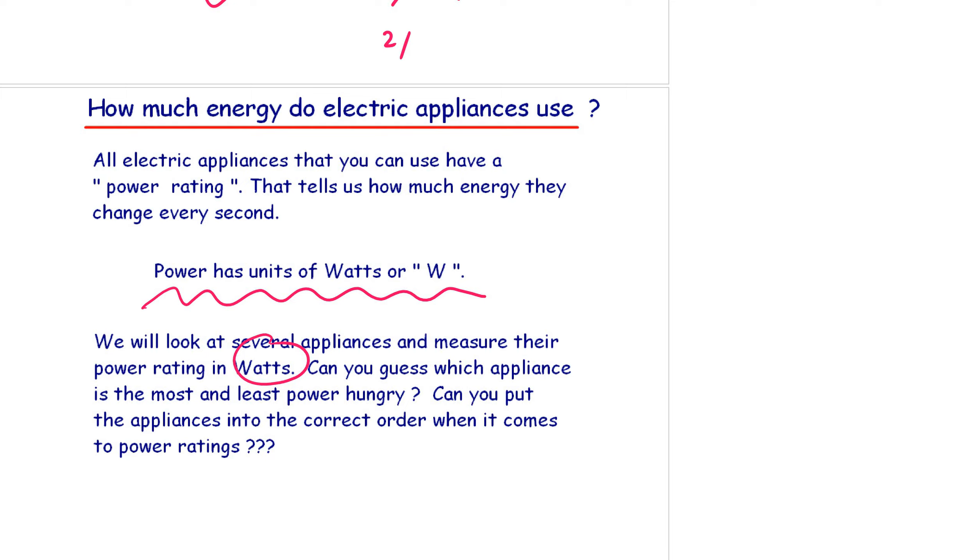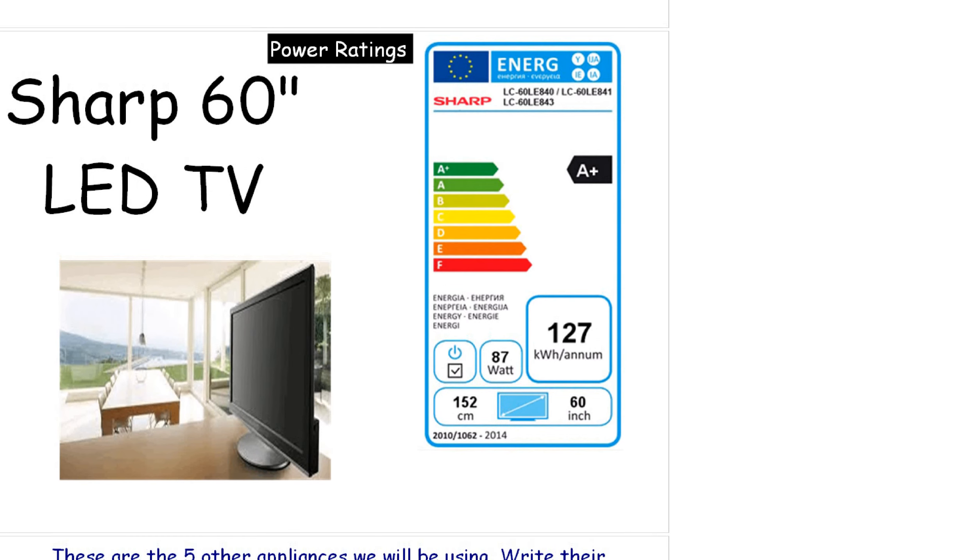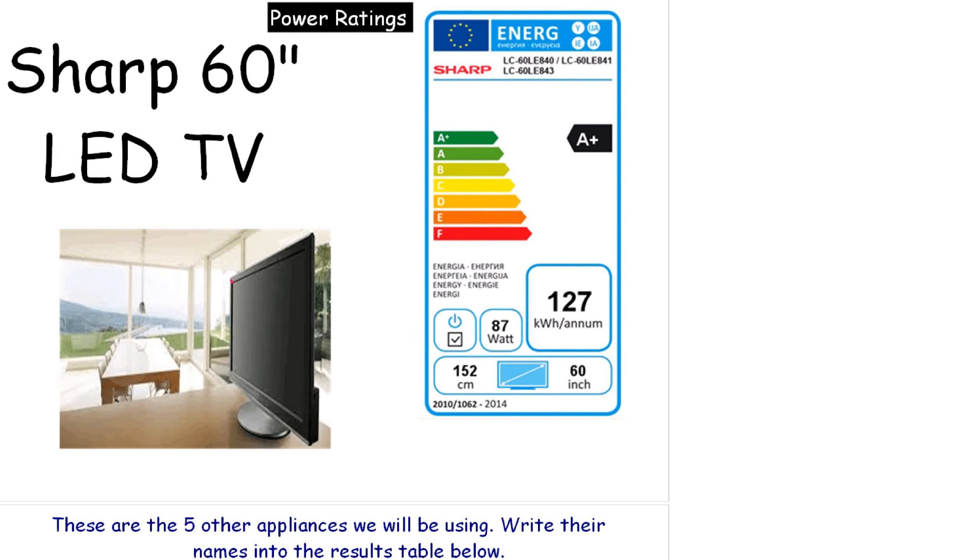Don't be afraid to get this wrong. For example, we've got here a Sharp 60 inch TV. Now 60 inches is five foot and it goes from one side of the TV to the other corner. That's how TVs are measured. When you buy a new TV, it will come with an energy certificate, a power rating, and the power rating for this appliance in watts is 87 watts.